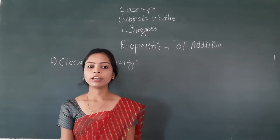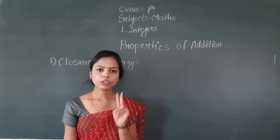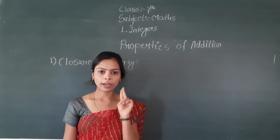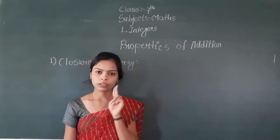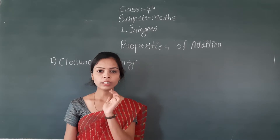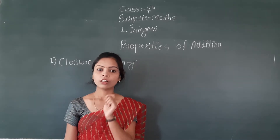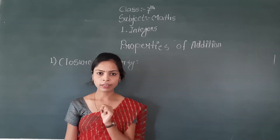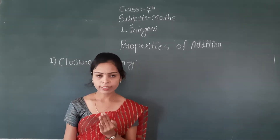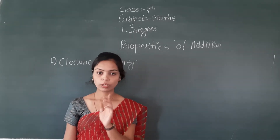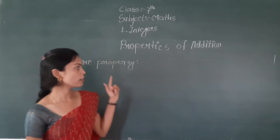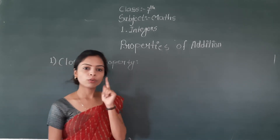What is the closure property? When you add two integers, the resultant sum is also an integer. When we add two integers, the answer is also an integer. This is our first property — the closure property.